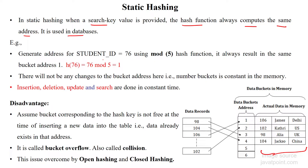For example, when student ID 76 is calculated using the table size of 5, applying mod 5 will always calculate the key value as 1. Whenever you pass the value 76, that value will be stored at index number 1.